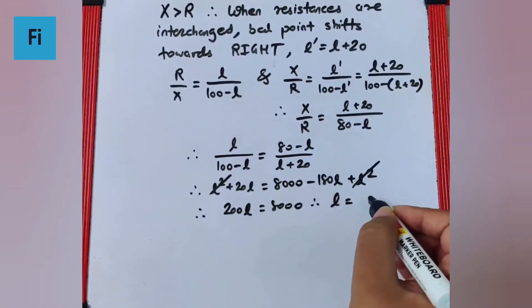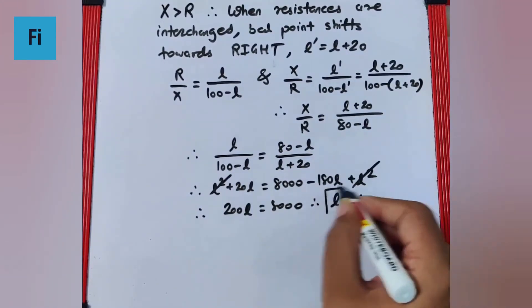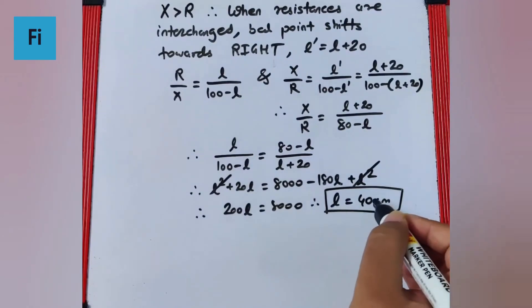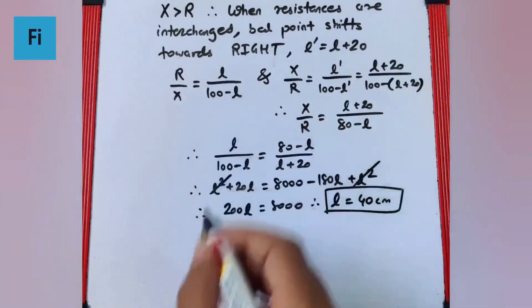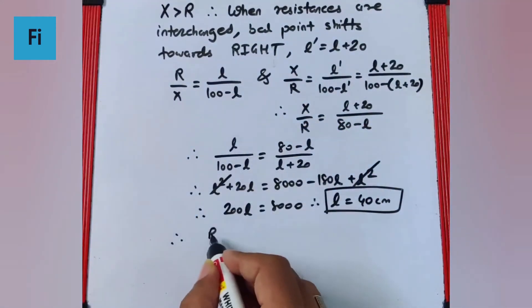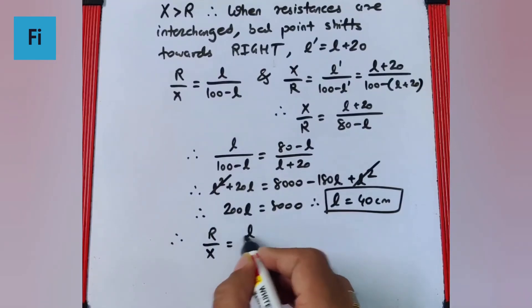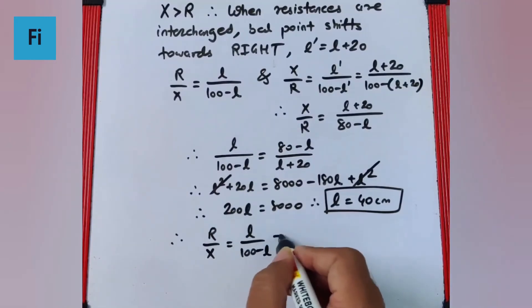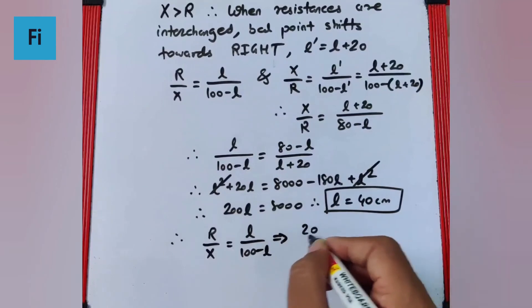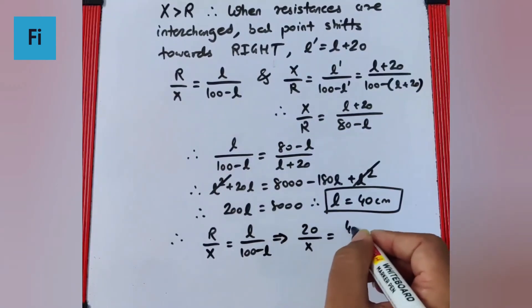Now when we get L, we can substitute that in this equation. So we get R upon X as L upon 100 minus L. 20 upon X is equal to 40 upon 100 minus 40, which is 60.